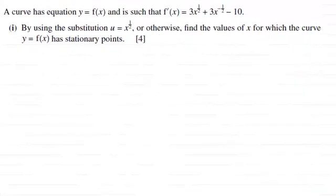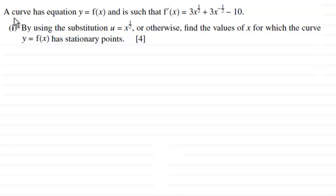Hi there. Now, for this question, we're given that a curve has equation y equals f of x, and is such that f dash x or f prime x equals 3x to the power half plus 3x to the power minus a half minus 10. And by using the substitution u equals x to the power half or otherwise, find the values of x for which the curve y equals f of x has stationary points for four marks.